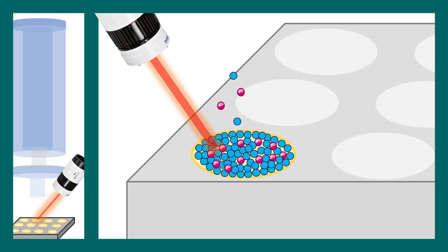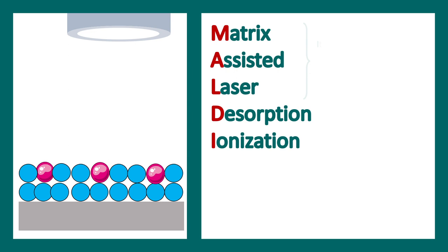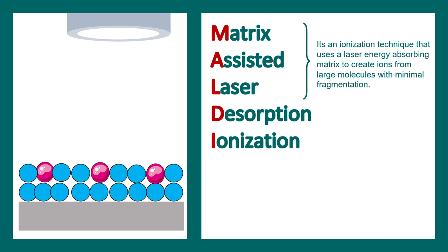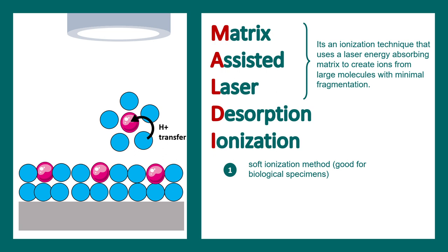If we look at this process in more detail, we would understand that it's a soft ionization technique which does not harm biological molecules and hence is appropriate for biological samples. Here is a laser hitting the matrix. It allows the desorption of analyte molecules along with the matrix molecule. The matrix molecule would eventually transfer protons to ionize these biomolecules. Once ionized, they enter the mass detector for analysis. This is a soft ionization method which is really good for biological specimens. It is cost-effective and easy to perform.